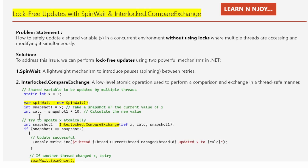Then I compare snapshot1 with snapshot2. If both are equal, it means the value of X has not been changed by another thread and the update was successful. In this case the thread prints: Console.WriteLine("Thread " + Thread.CurrentThread.ManagedThreadId + " updated x to " + calc). Then I have written spinWait.SpinOnce(). Why? If another thread changed X, we perform a retry. If the value of X was changed by another thread — meaning snapshot1 is not equal to snapshot2 — the thread will spin once using SpinWait.SpinOnce(), allowing the thread to retry the update after a short delay, avoiding the overhead of blocking or context switching.